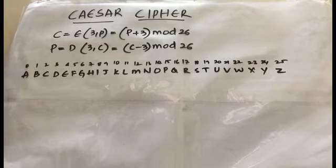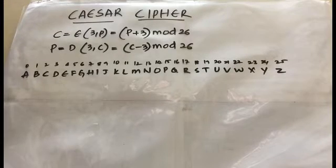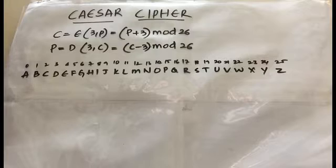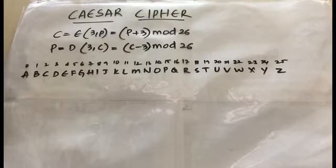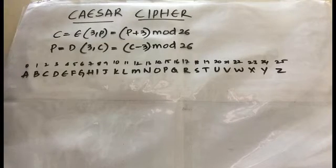Hello everyone, welcome back to my channel. In today's video we are going to learn about Caesar cipher technique in substitution techniques of information security. So far we have learned about mono-alphabetic ciphers and poly-alphabetic ciphers. Caesar cipher is also very simple — here you will be converting plaintext into ciphertext.